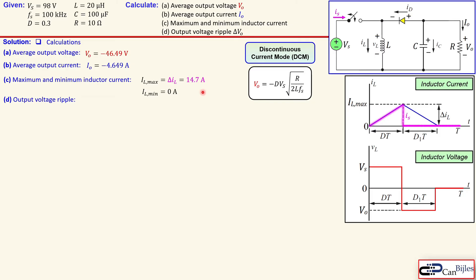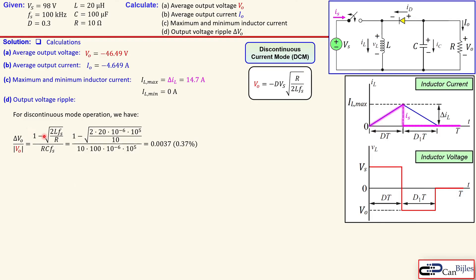The next question is the output voltage ripple delta Vo. In discontinuous current mode, we use a different formula for the output voltage ripple. Compared to the continuous current mode formula — which was simply d — we now replace it with one minus the square root of (2L times switching frequency over R). Applying this formula gives a ratio of 0.0037, or 0.37 percent. Therefore delta Vo is 0.0037 times the output voltage magnitude, giving approximately 171 millivolts peak-to-peak.